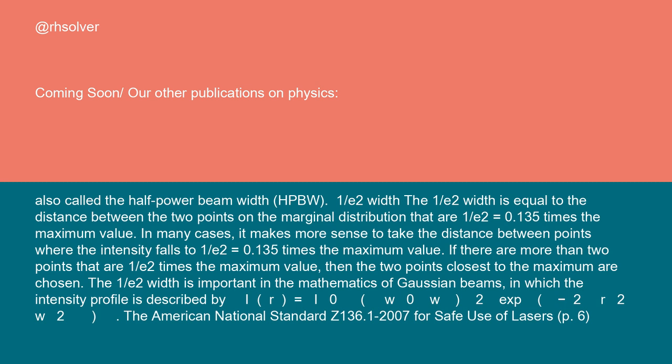The American National Standard Z136.1-2007 for safe use of lasers (page 6) defines the beam diameter as the distance between diametrically opposed points in that cross-section of a beam where the power per unit area is 1/e (0.368) times that of the peak power per unit area. This is the beam diameter definition that is used for computing the maximum permissible exposure to a laser beam. In addition, the Federal Aviation Administration also uses the 1/e definition for laser safety calculations in FAA Order GEO 7400.2 paragraph 29-1-5D.